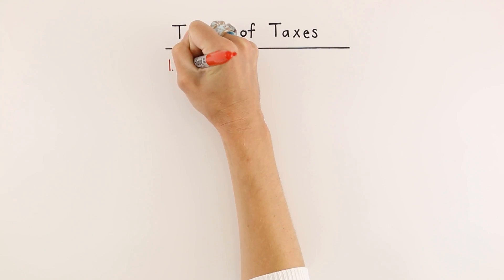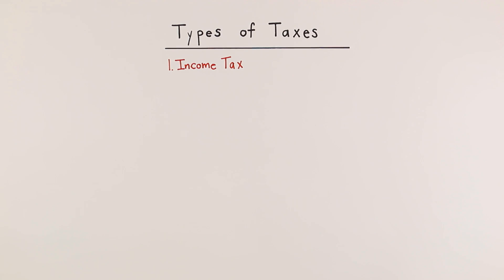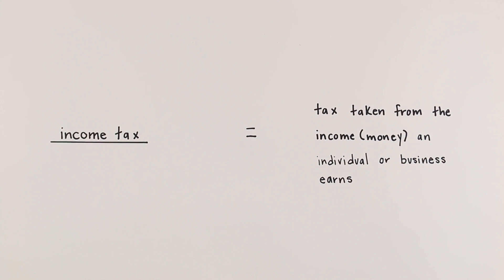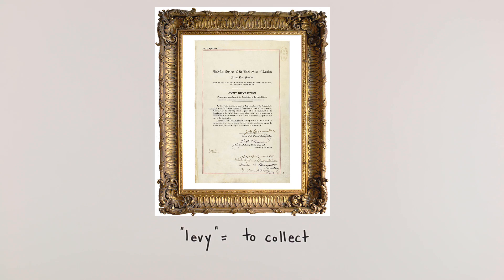We will start with income tax. Income tax is tax taken from the income, or money, an individual or business earns. In 1913, the 16th Amendment gave the federal government the power to levy an income tax. Levy means to collect.